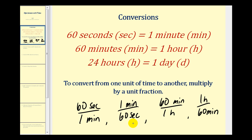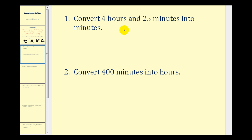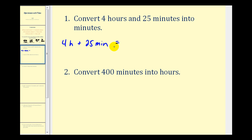Let's take a look at our first example. We want to convert four hours and twenty-five minutes into minutes. We could think of this as four hours plus twenty-five minutes, which tells us we have to convert hours into minutes to get the total number of minutes.